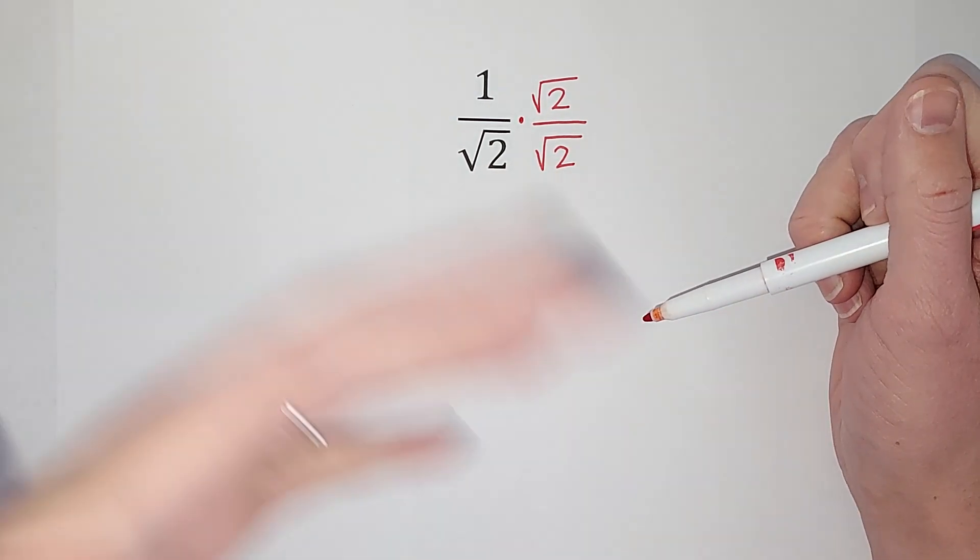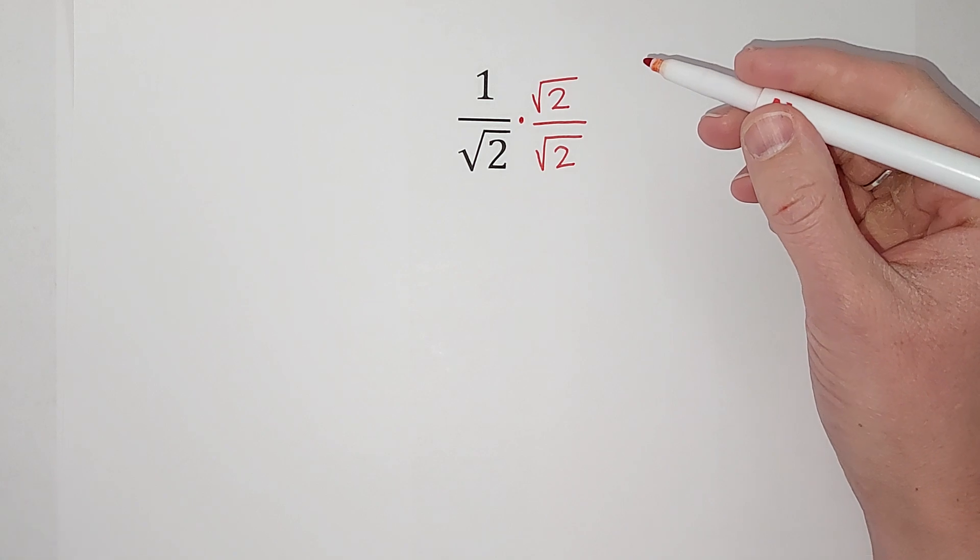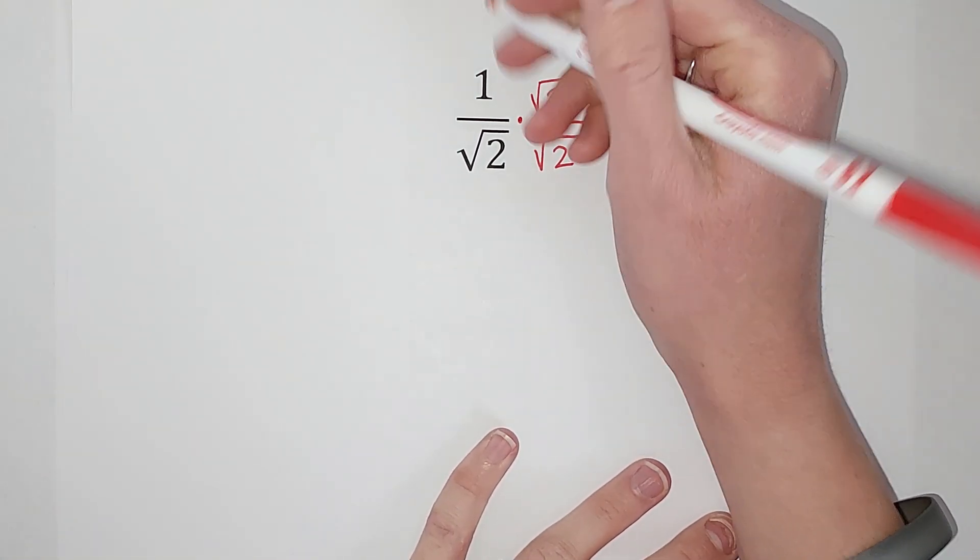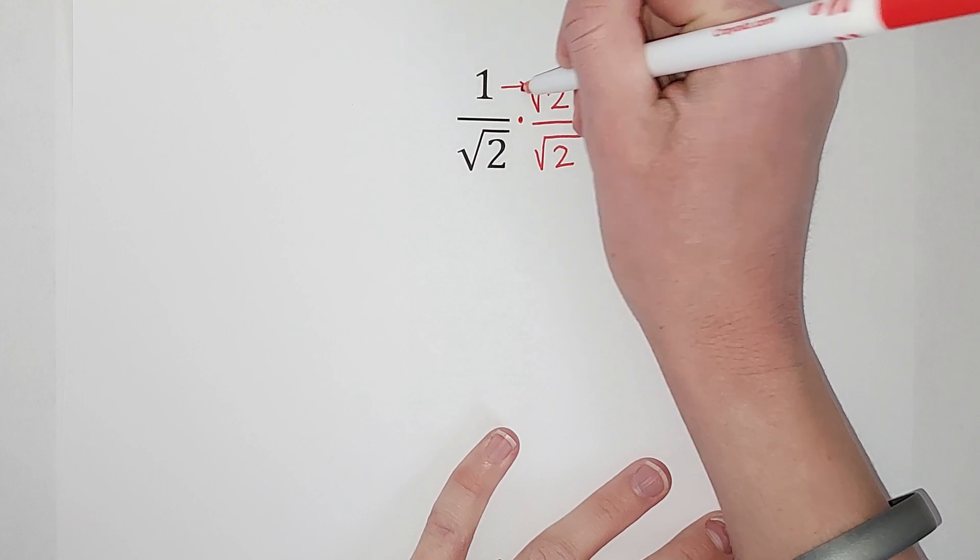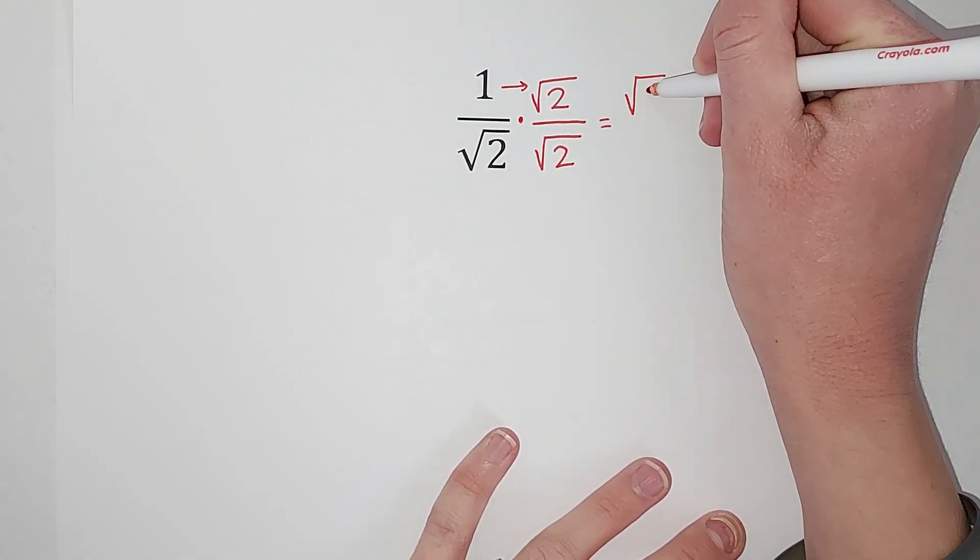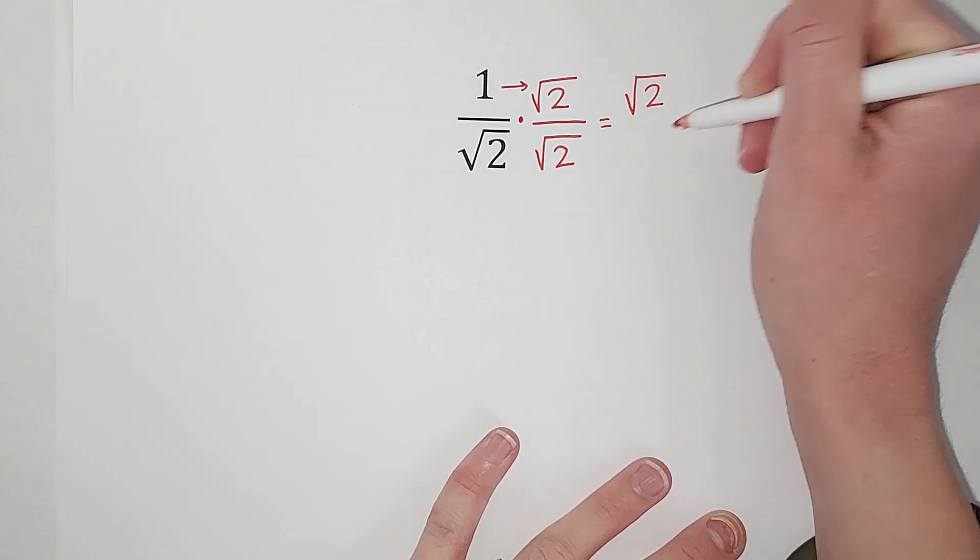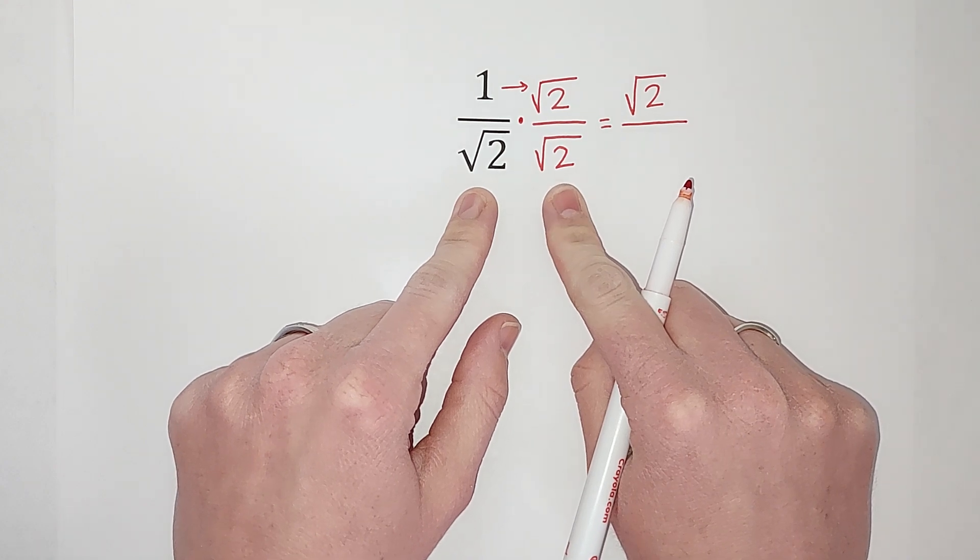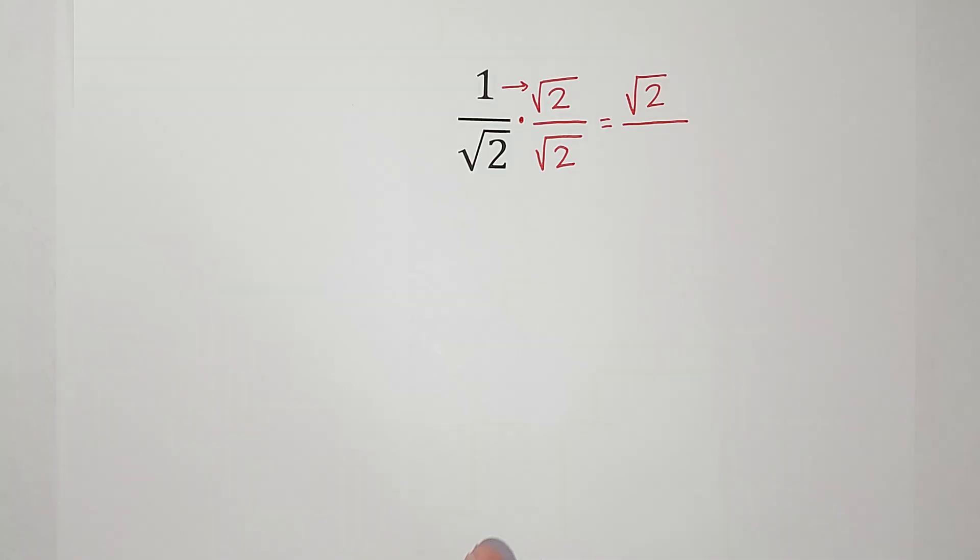And then watch what happens when I do this. When I multiply fractions, I multiply straight across. So one times the square root of two gives me the square root of two, right? And that is going to be over the square root of two times the square root of two.